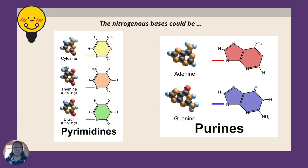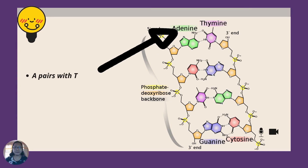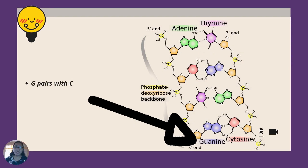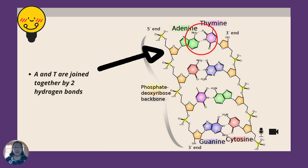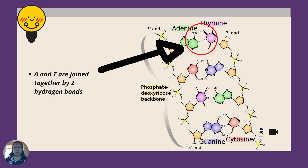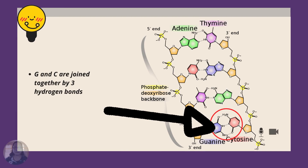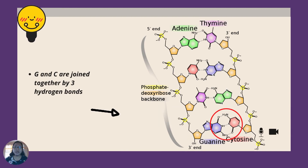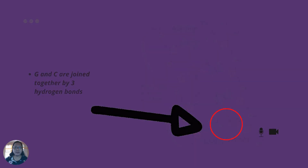The nitrogenous bases can be pyrimidines, which include cytosine and thymine — uracil is for RNA. And then we have purines, like adenine and guanine. Adenine always pairs with thymine, and guanine always pairs with cytosine. Adenine and thymine are joined together by two hydrogen bonds, while guanine and cytosine are joined together by three hydrogen bonds.